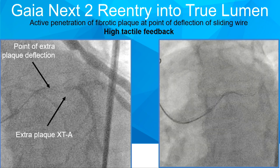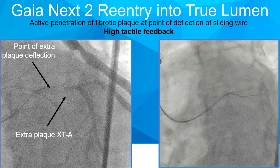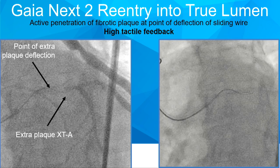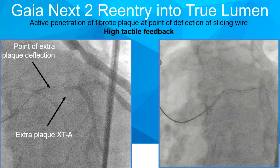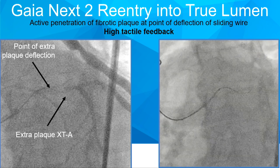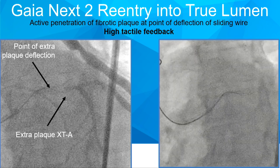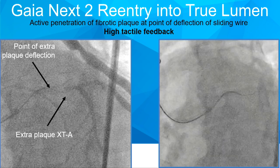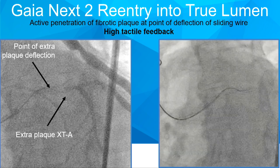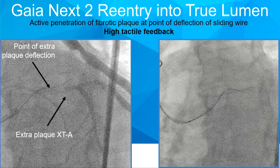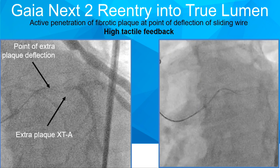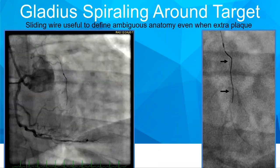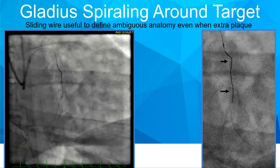This is an example of a left main CTO where the soft jacketed wire very quickly became extraplaque — deflected off course — and people might panic here, but this is not a problem. You've now identified the course of the left main. Then take a steerable wire and drive it away from where you've deflected off course. Using the GAIA series wire to on purpose drive away from where we felt we veered, we very quickly re-entered the true lumen distally — using high tactile feedback to correct the problem of the deflected soft wire.